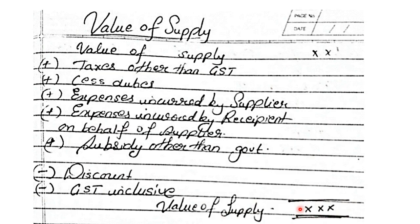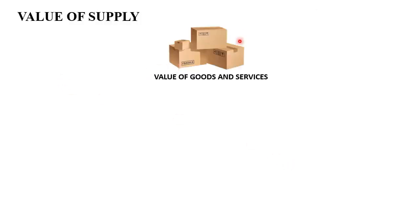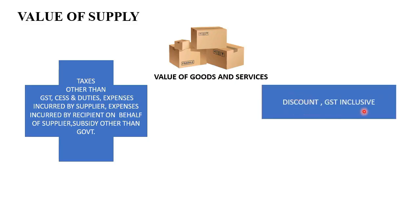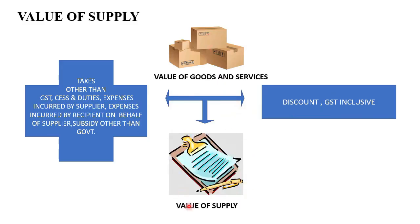To put this in graphical terms: value of supply equals value of goods and services, plus all taxes other than GST, plus all cesses and duties, plus all expenses incurred by the supplier and recipient on behalf of the supplier, plus all subsidies other than government, minus discount or inclusive GST if any. Whatever final bill amount comes up is nothing but your value of supply. Let us now take the first problem sum and find the value of supply.